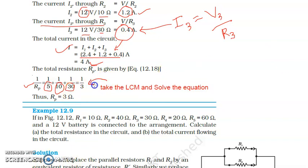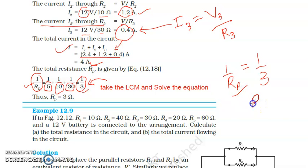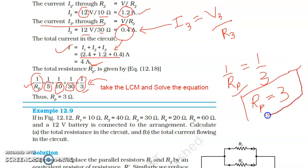An important point — and this is where many students make a mistake: after solving, 1/Rp comes out to be 1/3. The question asks for Rp, not 1/Rp. So we take the reciprocal, and the value for Rp = 3 ohm. Be very careful to take this reciprocal step.